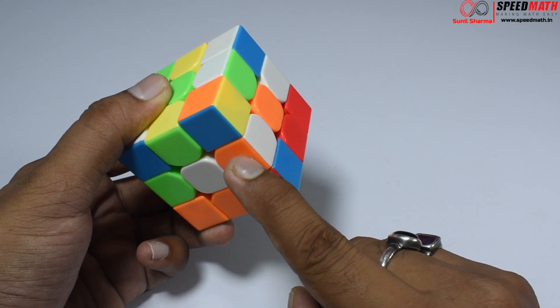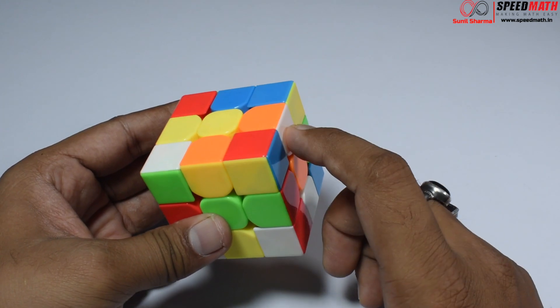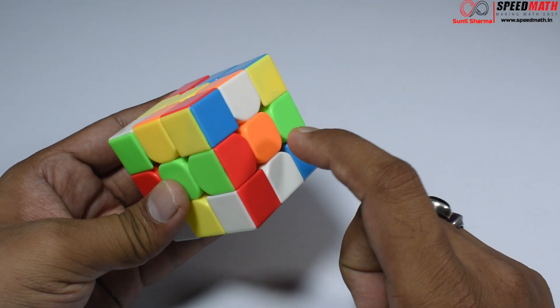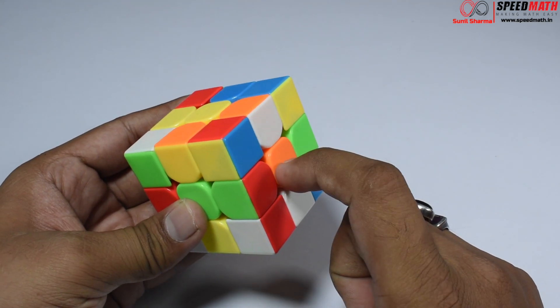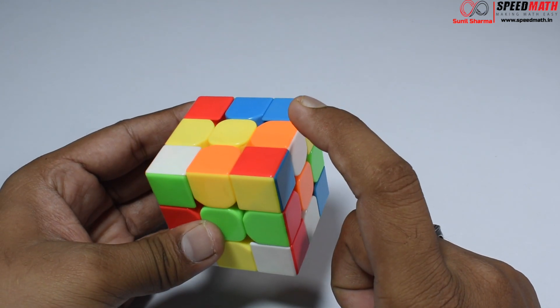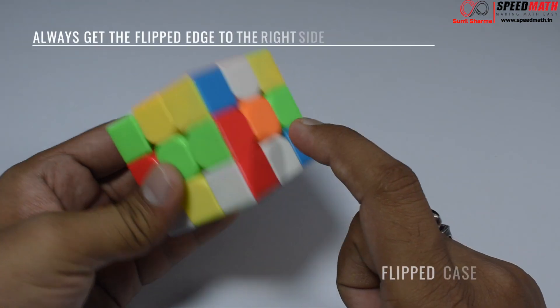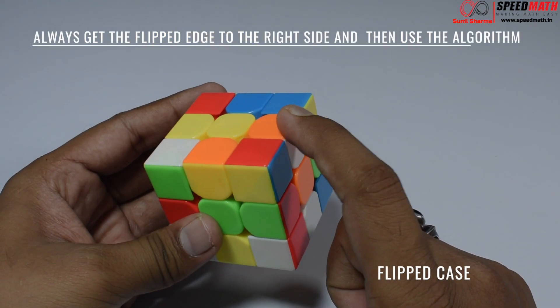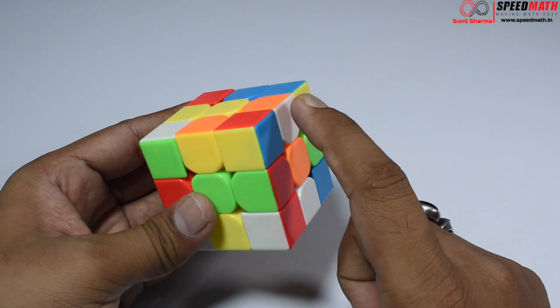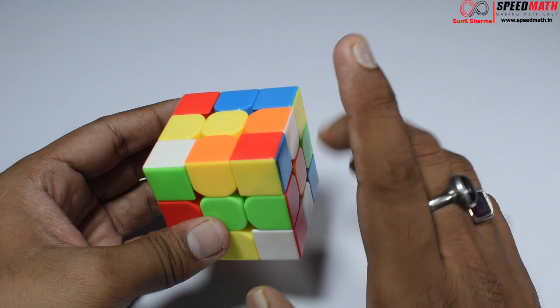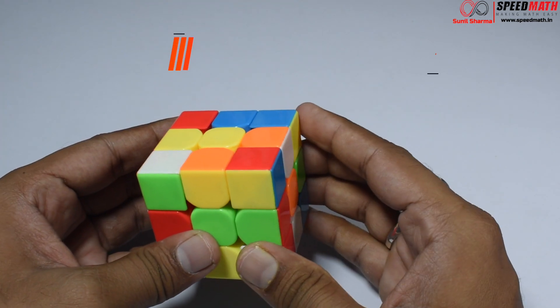In a flip case, first observe we have orange color and it's above the orange center piece. Whatever edge piece you want here, you should have it exactly opposite in the top layer. I want this edge piece here, so I've brought it here in the top layer exactly opposite. This is a flip case.